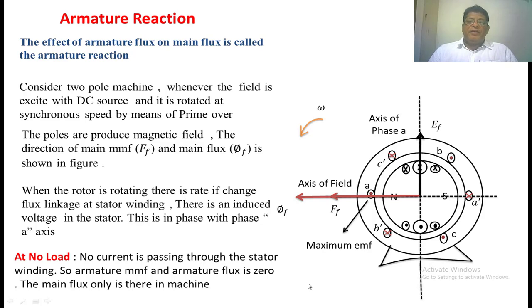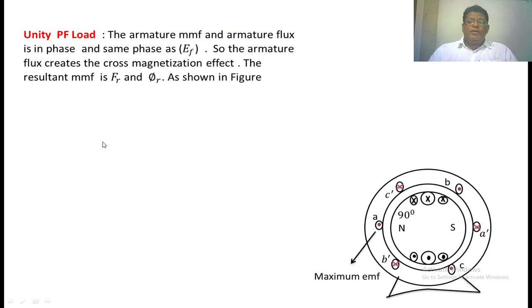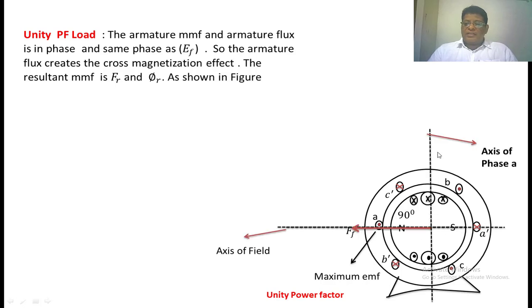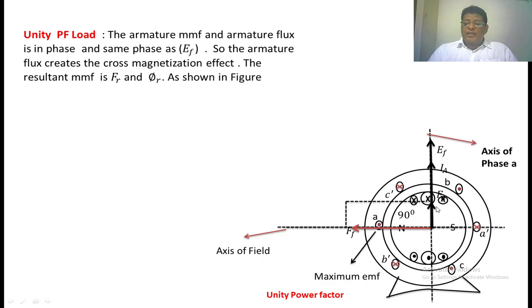Now we are going to examine how armature reaction affects the synchronous generator during unity power factor. Whenever we connect a resistive load across the stator winding of the synchronous generator, the current is in phase with the excitation voltage EF. We have taken the axis of the main flux and placed FF on it. On the axis of phase A, we have taken EF. Because of EF, the current IA is passing through the stator winding. Whenever IA passes through the stator winding, armature MMF FA comes into the picture — it is in phase with IA. Armature MMF is nothing but the number of turns in the stator winding multiplied by current. FA is in phase with IA.